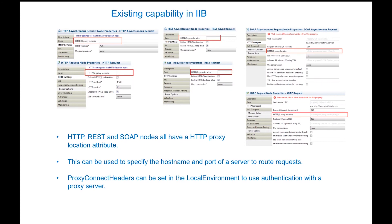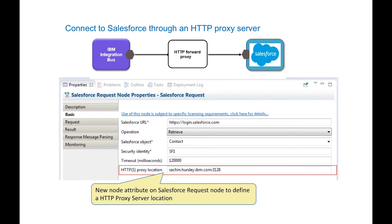The existing HTTP, SOAP, and REST request nodes already have an HTTP proxy location attribute. This attribute can be used to specify the hostname and port of a proxy server to route requests. The Salesforce request node has been extended to also have an HTTP proxy location attribute. If the HTTP proxy server does not have authentication enabled, then the HTTP proxy location attribute value is all that is needed.